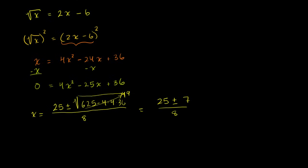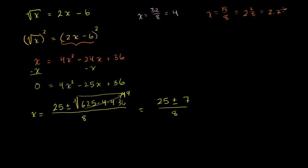So our two solutions: if we add 7, we get x equals 25 plus 7, which is 32 over 8, equal to 4. And our other solution: x equals 25 minus 7, which is 18 over 8, equal to 2 and 1/4, or 2.25.